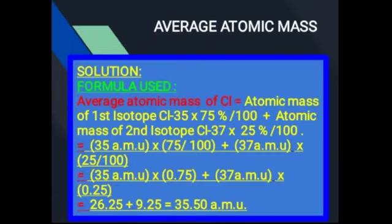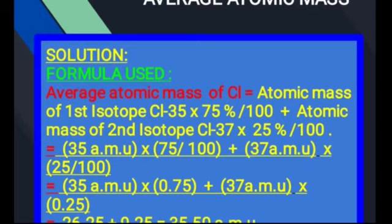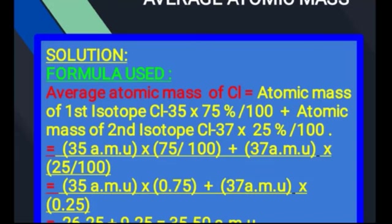Next step: atomic mass of first isotope 35، یہ nature میں 75% پائے جاتے ہیں — 75 divided by 100 — plus atomic mass of second isotope chlorine-37 multiplied by 25 divided by 100۔ Chlorine-37 جو second isotope ہے وہ nature میں 25% پایا جاتا ہے۔ اب اس کو solve کرتے ہیں: 35 AMU (atomic mass unit) — اس کے weight کے ساتھ لکھا جاتا ہے۔